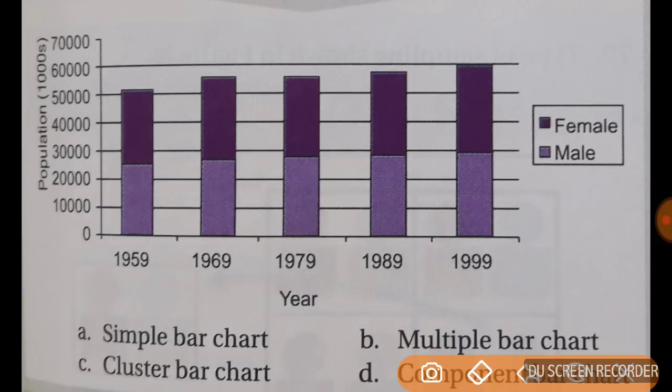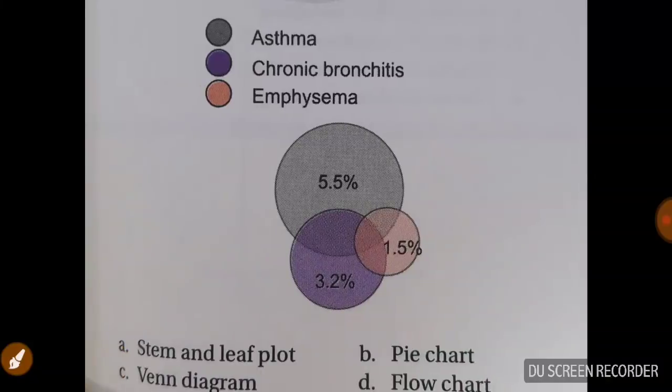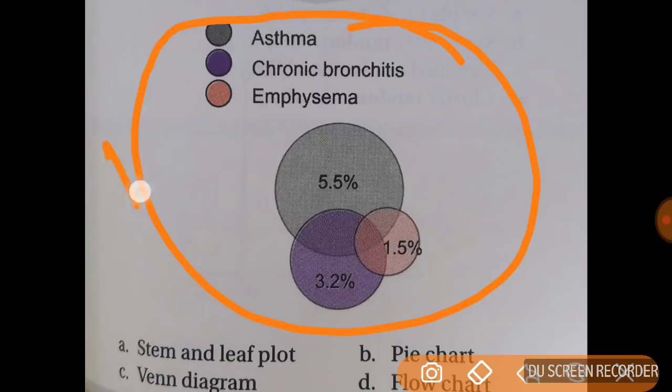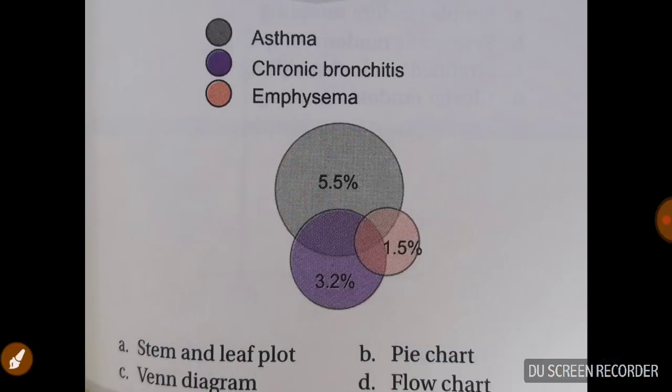It is component bar chart. You have further divided it into the components like male and female here. So it is component bar chart. Now tell me what is this diagram. So this is Venn diagram. Very important Venn diagram. It shows all the possible logical relations between a finite collection of different sets. It is used in medicine to depict overlapping medical conditions through overlapping circles. So don't forget this. It is Venn diagram.